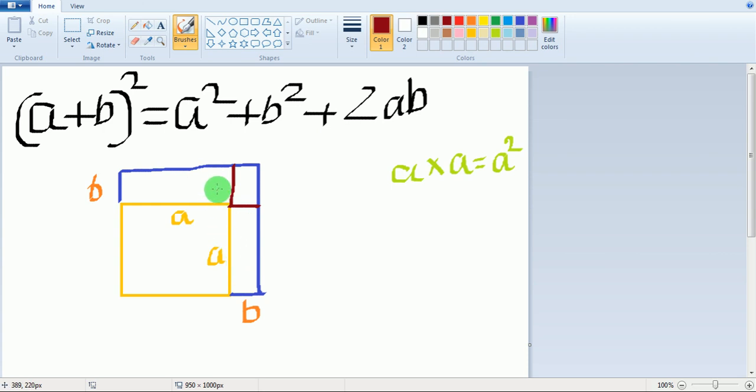Now the area of this region would be a into b. Similarly, area of this region is a into b, and area of this region is b into b.